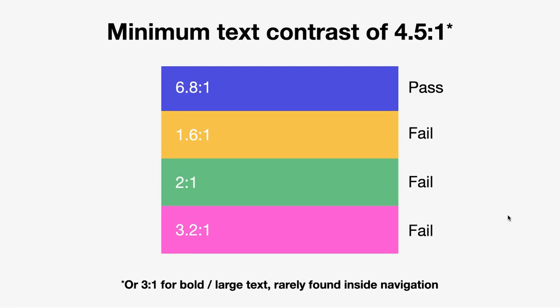I'm simplifying a bit here — it's a 3 to 1 contrast for bold or large text, but you rarely have bold or large text in navigation. So I'm just going to call it 4.5.